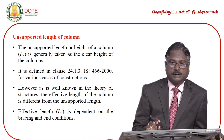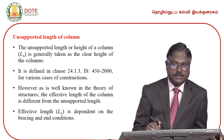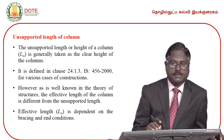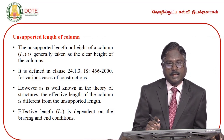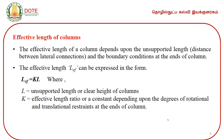Effective length is an equivalent length of an axially loaded compression member having hinged ends with the same buckling effect. The effective length is calculated by multiplying the unsupported length by a factor. For the calculation of effective length, one can refer to the tabular column given in IS 456-2000. Based on the support conditions — fixed support, hinged support, roller support, and free end — the effective length varies.